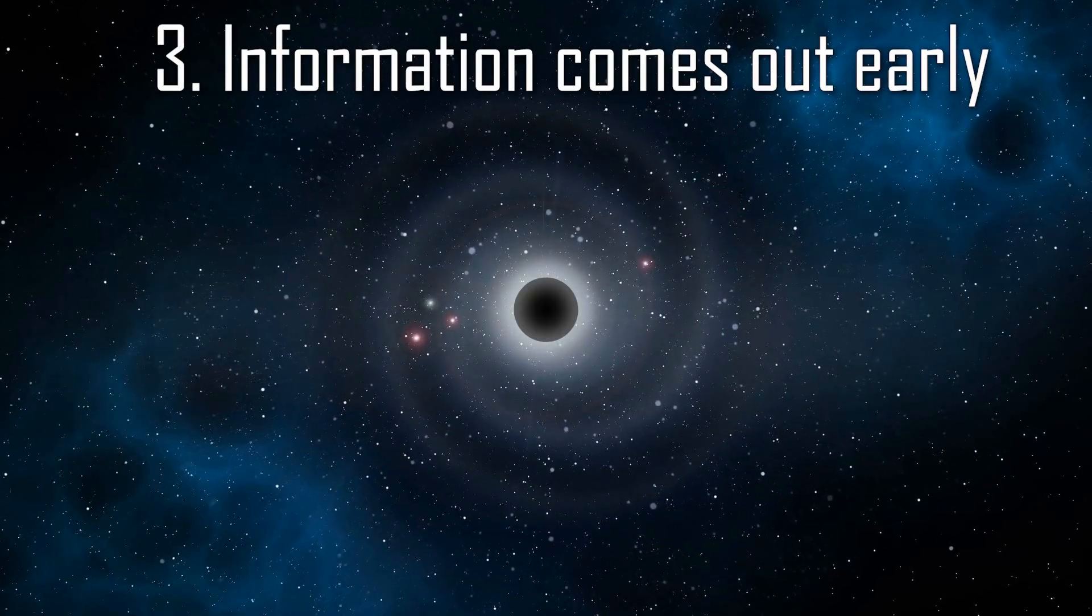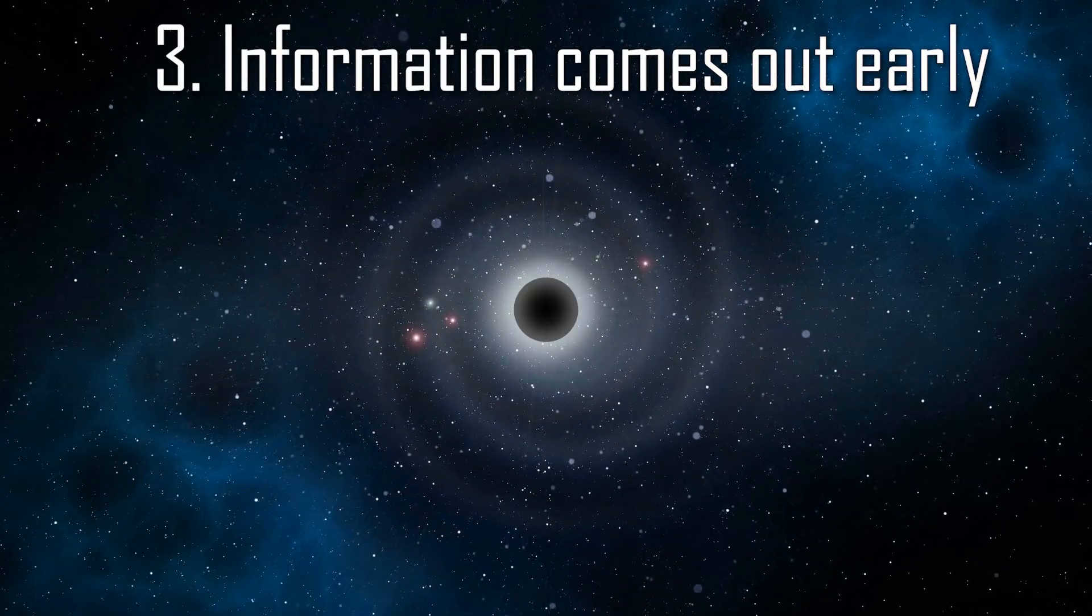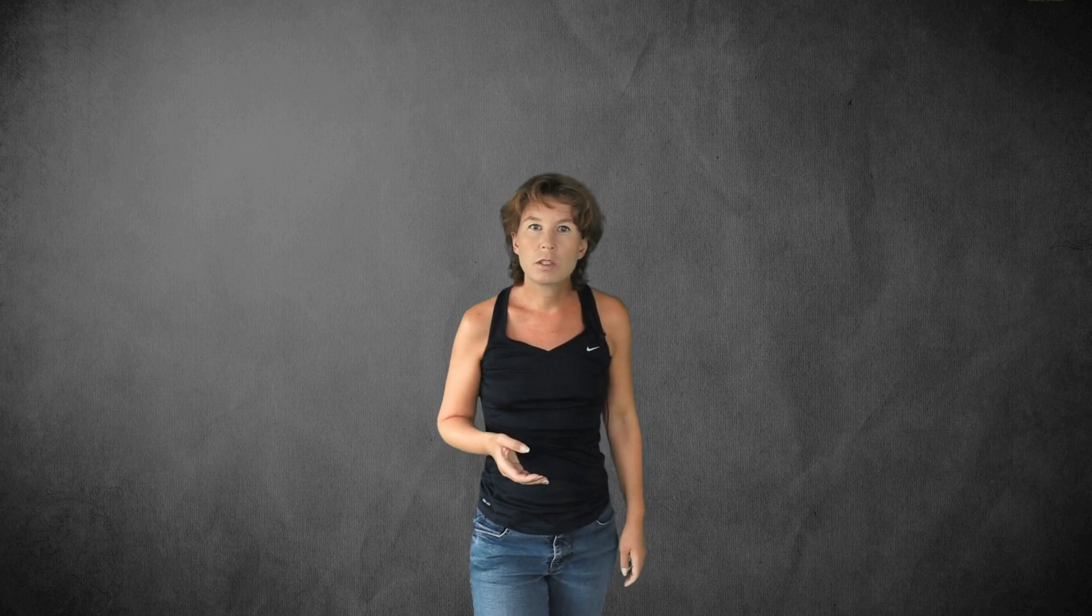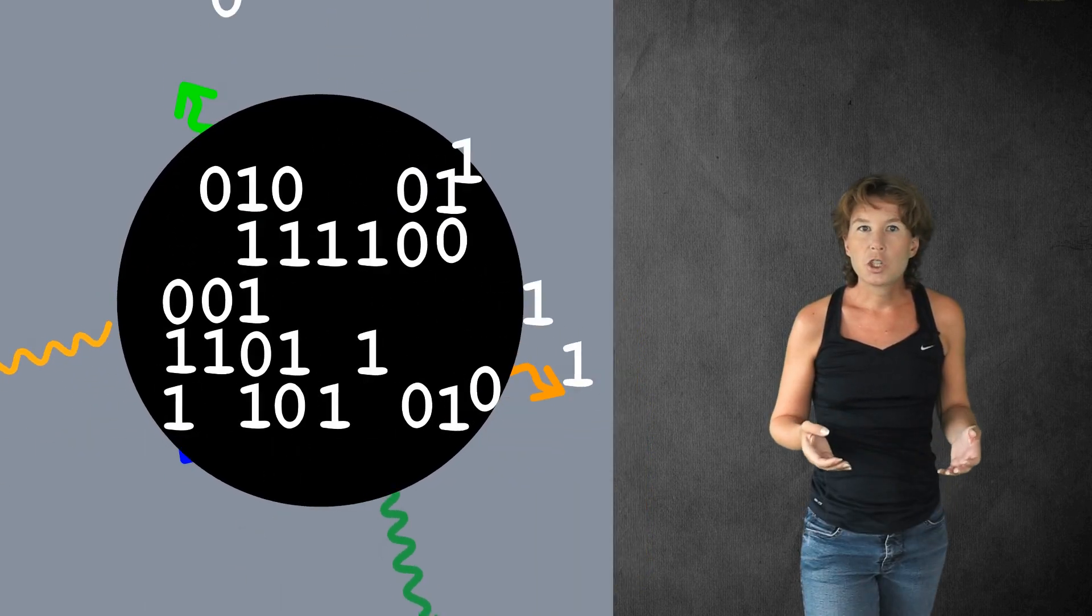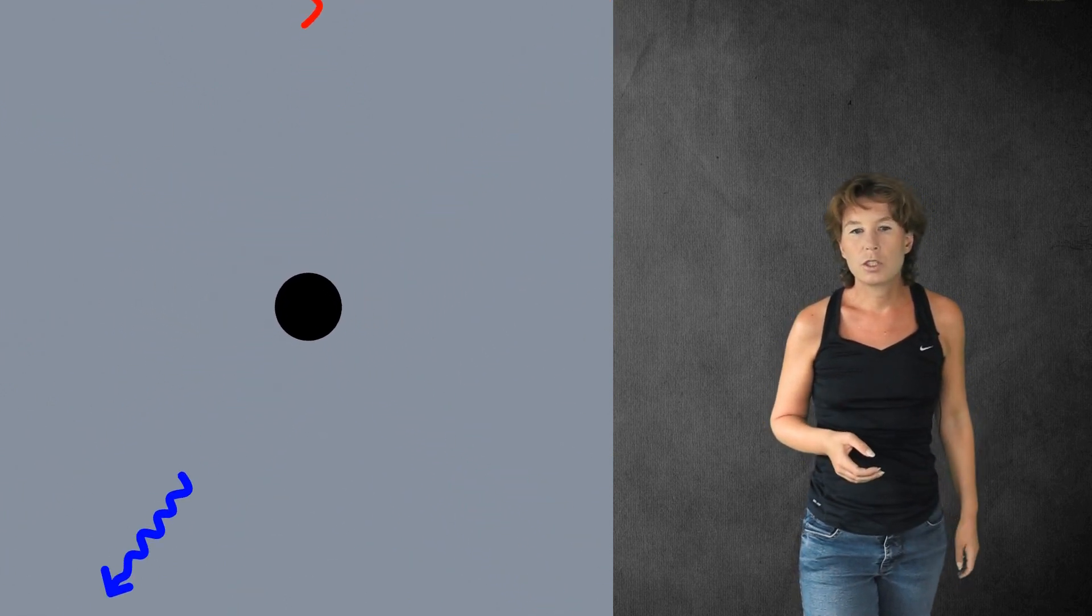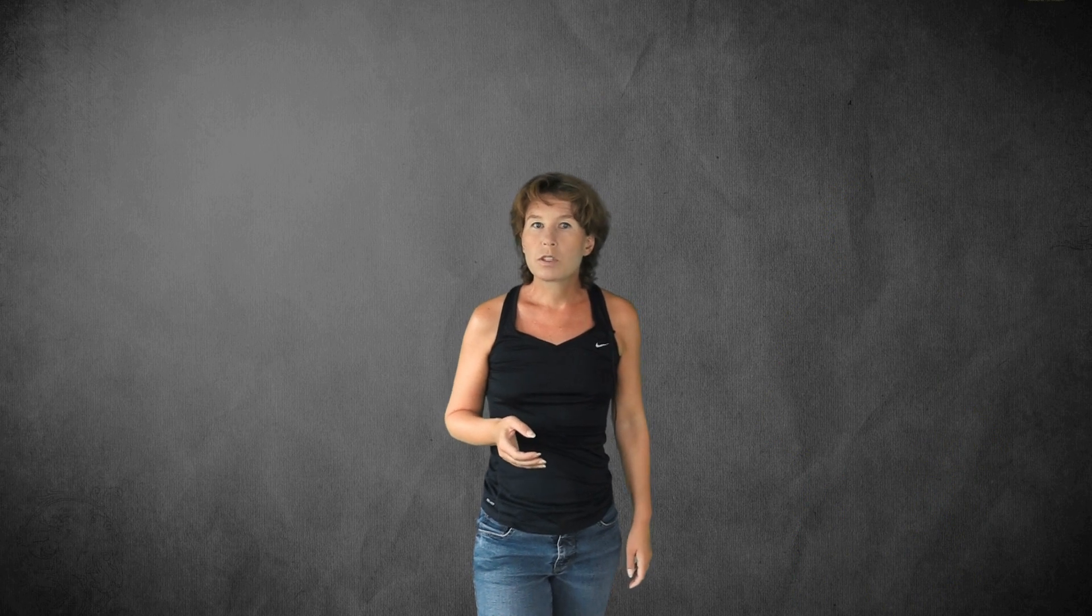Third, information comes out early. The first two scenarios are very conservative in that they postulate new effects will appear only when we know that our theories break down. A more speculative idea is that quantum gravity plays a much larger role near the horizon and the radiation carries information all along, it's just that Hawking's calculation doesn't capture it. Many physicists prefer this solution over the first two for the following reason.